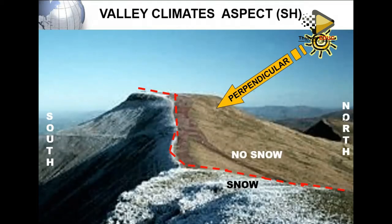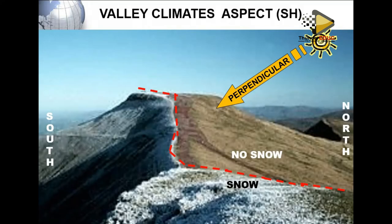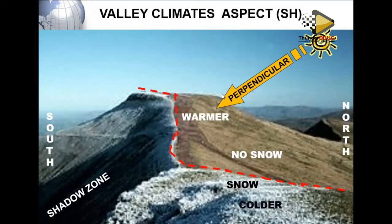We call this the north-facing slope because it is facing the north. On this north-facing slope, you find it becomes warmer because it is experiencing direct sun rays — direct solar insolation. The slope receiving the sun at angles less than 60 degrees will be cooler. The slope not experiencing direct sun will be in the shadow zone, so it will be cold.